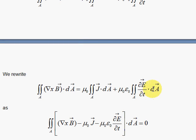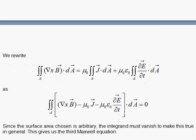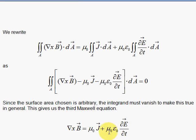Which will be very elegant to move everything to one side of the equation. So we can use the arbitrary argument once again, that since the area can be chosen in an arbitrary fashion, for this to always be zero, the integrand has to vanish. And that leads us to the third Maxwell equation in differential form. Very nice result.